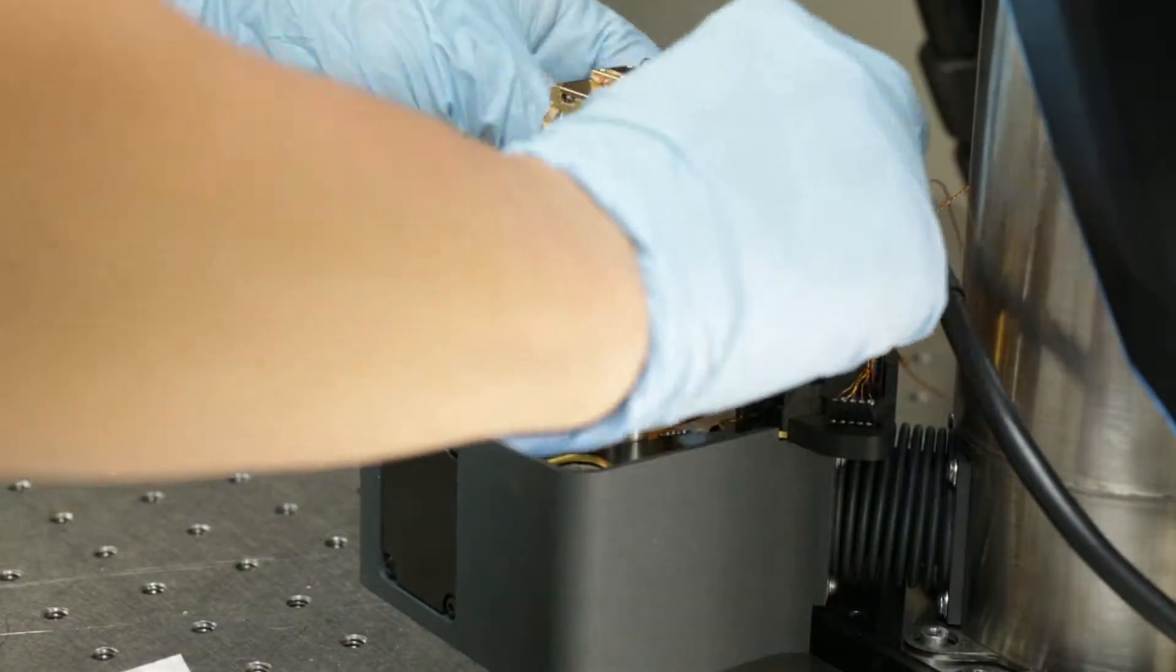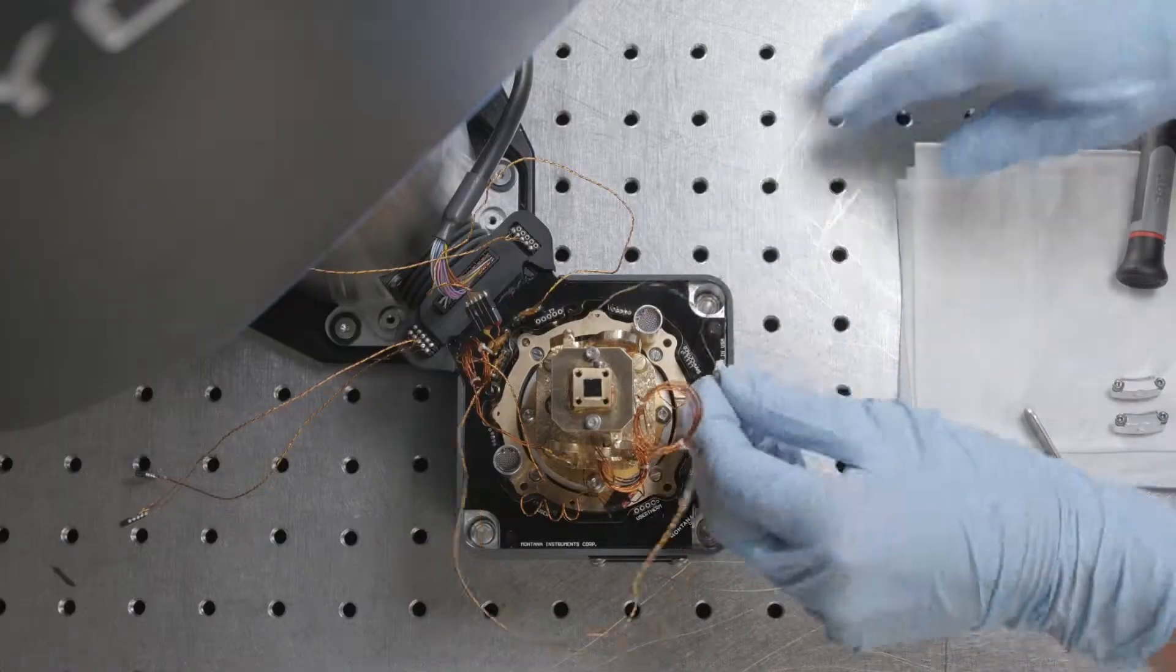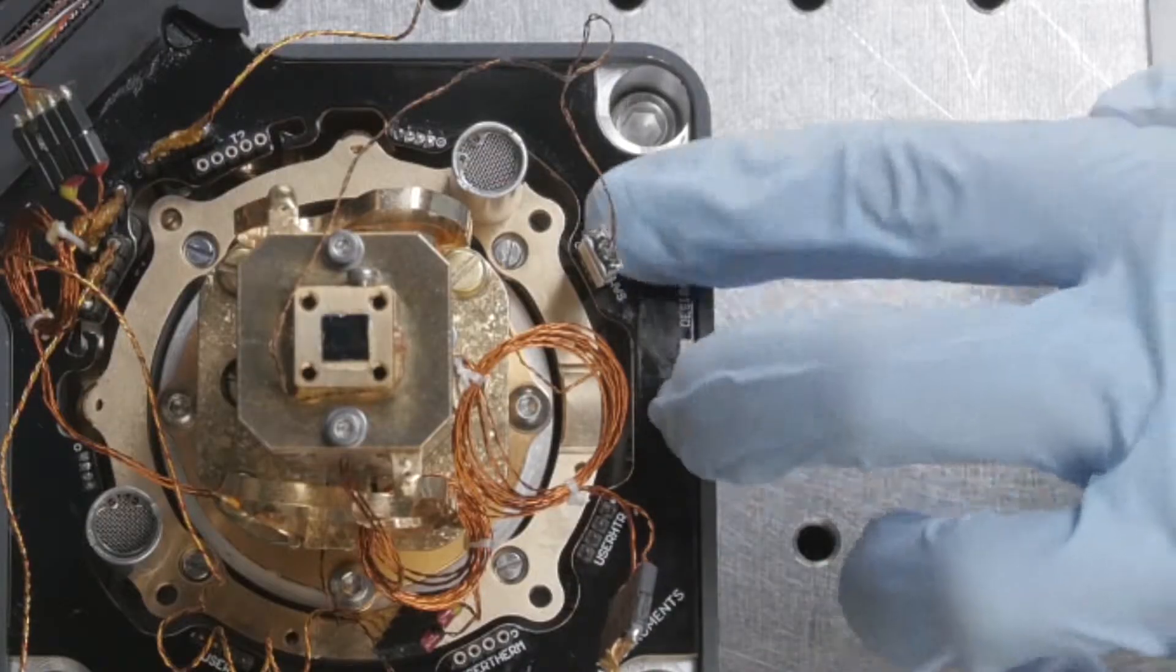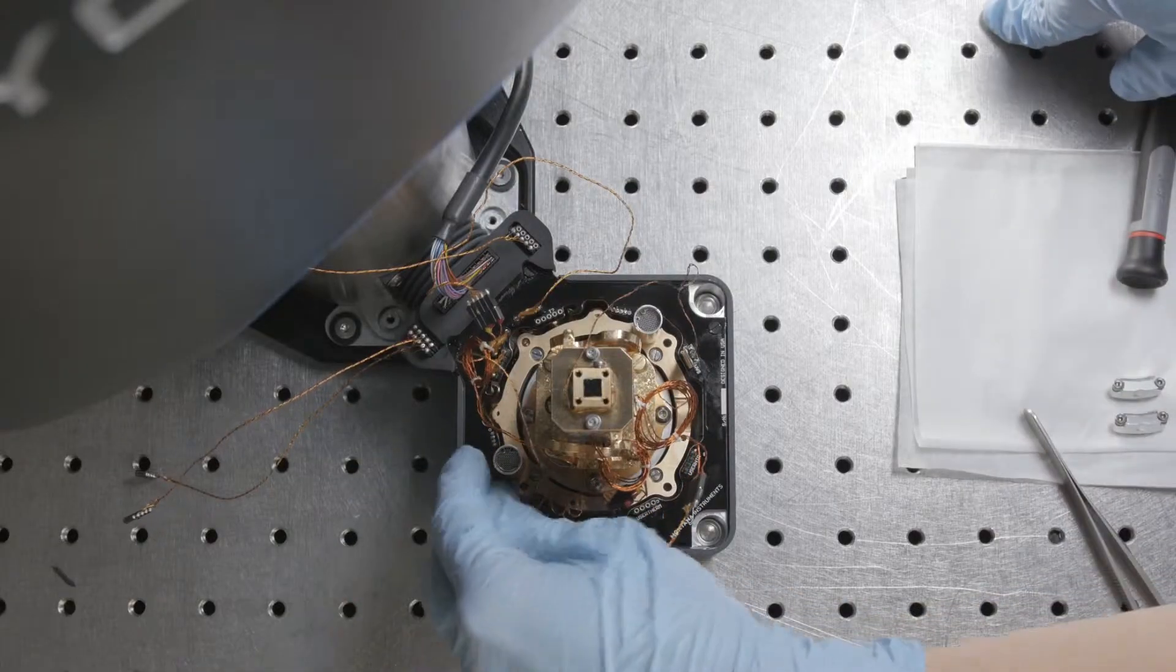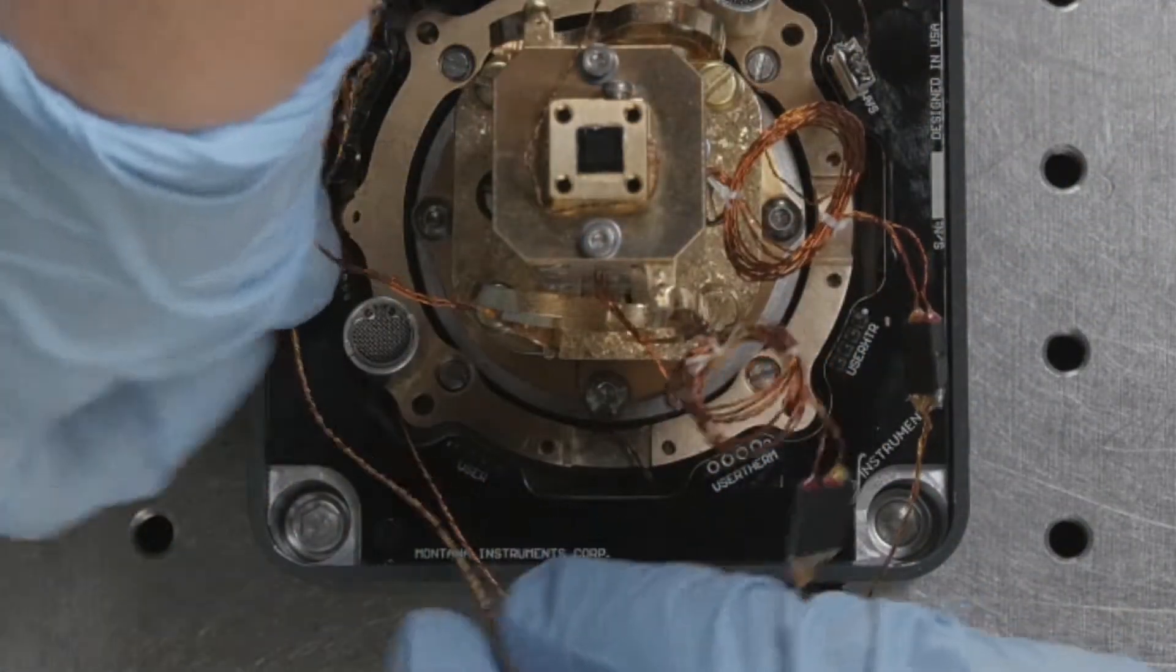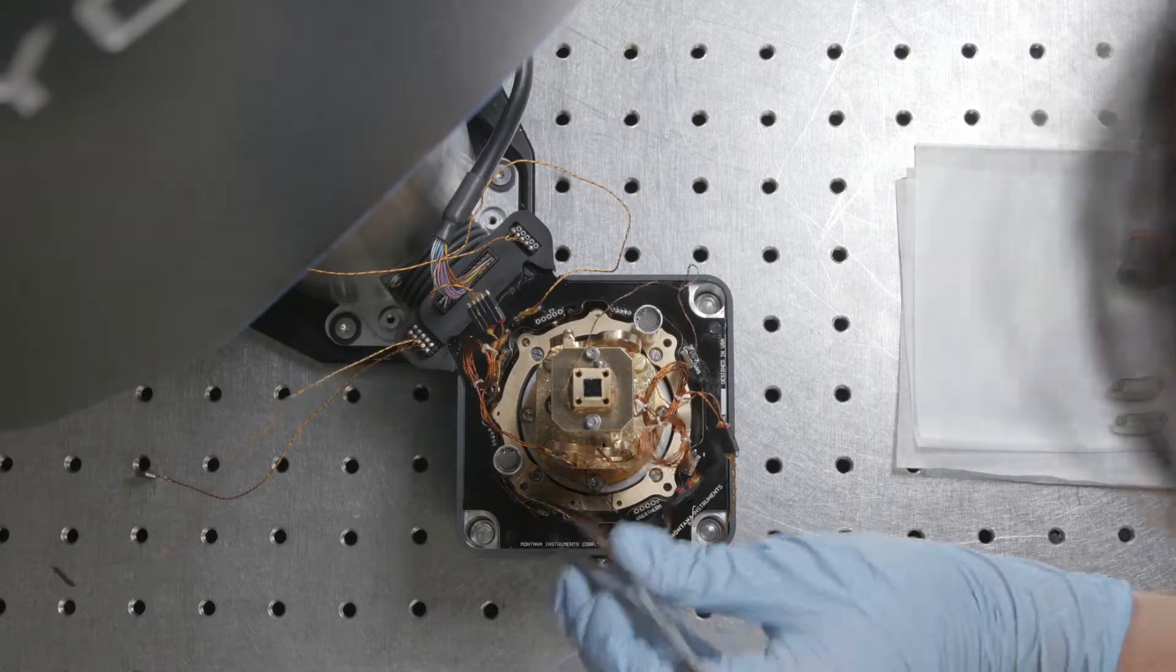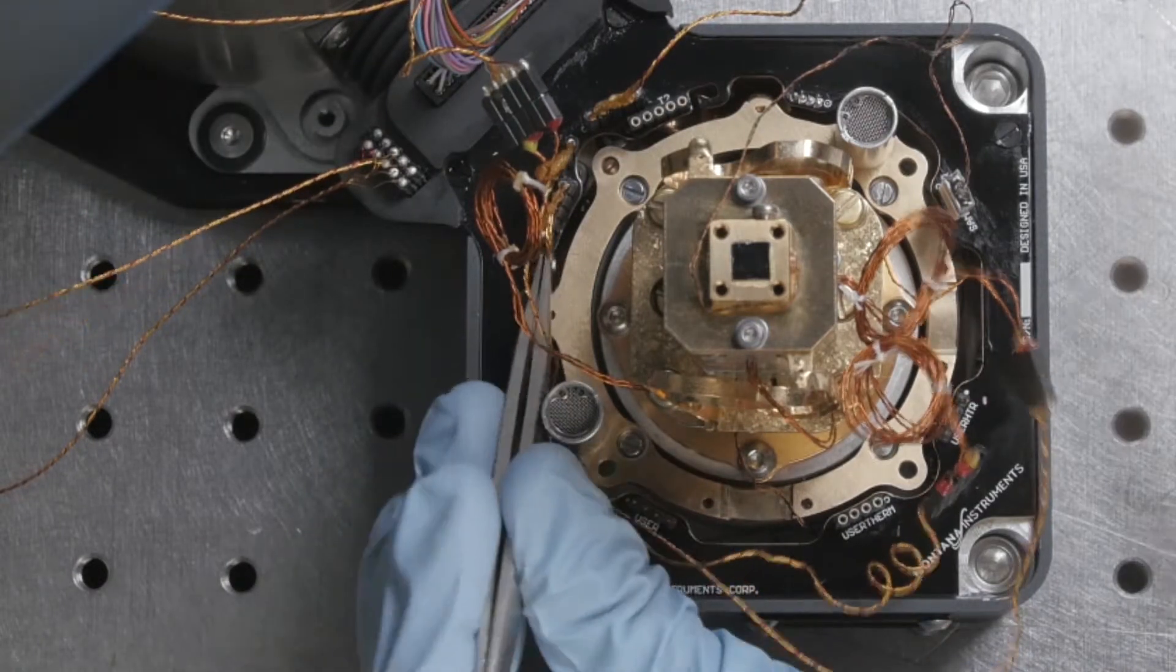And now I'm going to plug in the sample thermometer to the sample therm port and that's symmetric so it can go either way. I'm going to route the wires underneath the circuit board for wire management, and you can use tweezers also and then there's these hooks here that you can route the wires through.